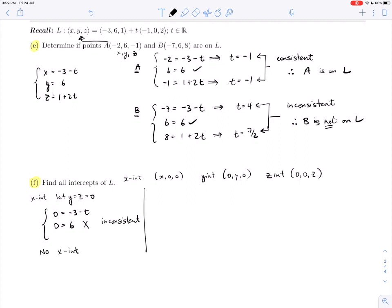Let's do the same thing for the y-intercept, which means we let x and z be 0. Again, we'll plug those into the parametric equation form: 0 = -3 - t, y = 6, and 0 = 1 + 2t. This has a possibility here, let's see what happens. Here we get t = 3, and here we get t = -1/2. That is not possible—again, inconsistent. That tells us we have no y-intercept.